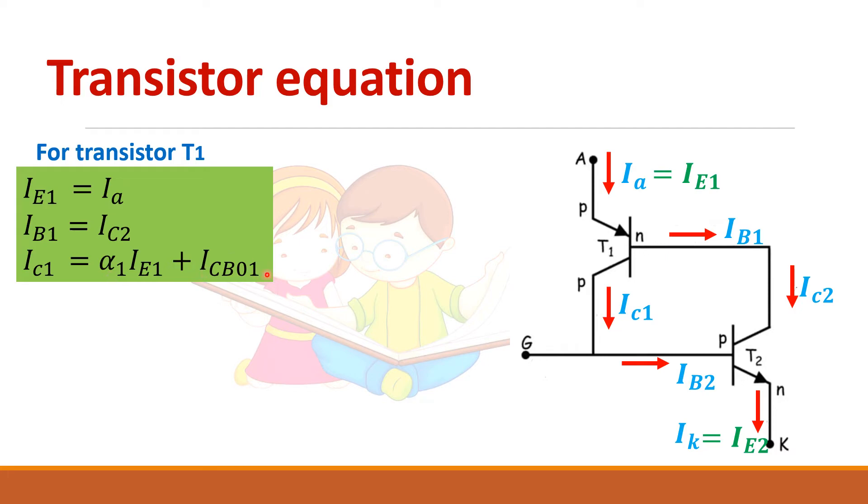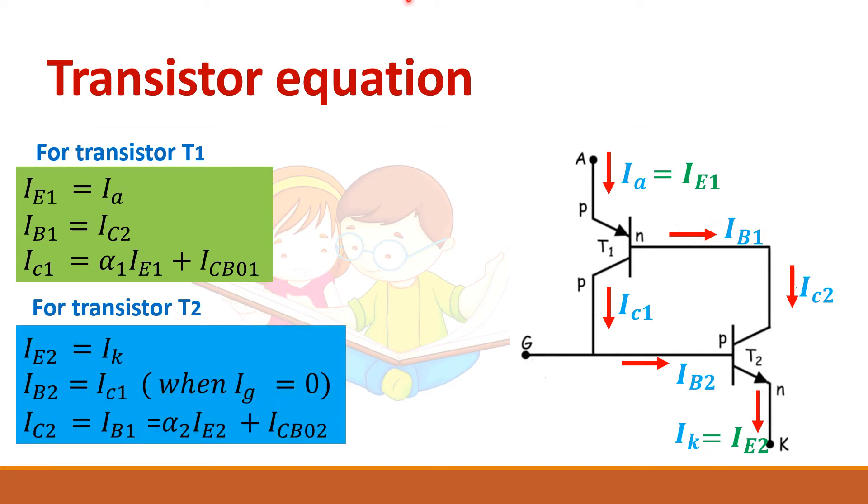Similarly for transistor T2, IE2 that is the emitter current is equal to cathode current. Base current is equal to this collector current. So this collector current is equal to this collector current or you can write this same equation alpha 2 IE2 plus leakage current.